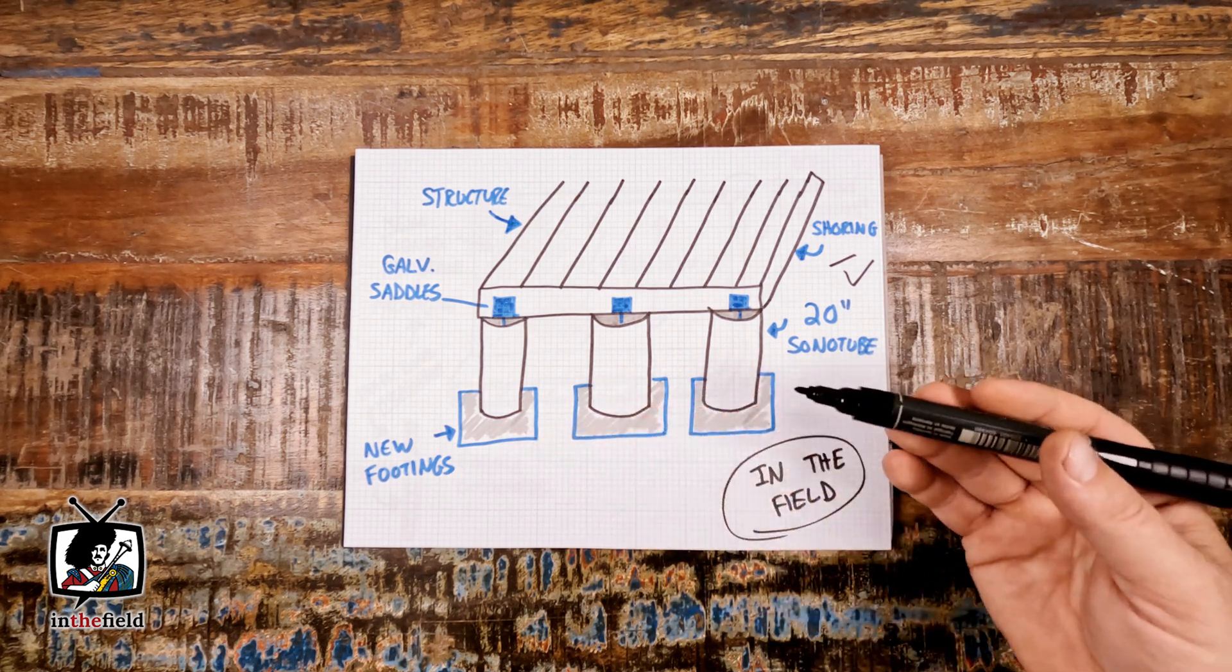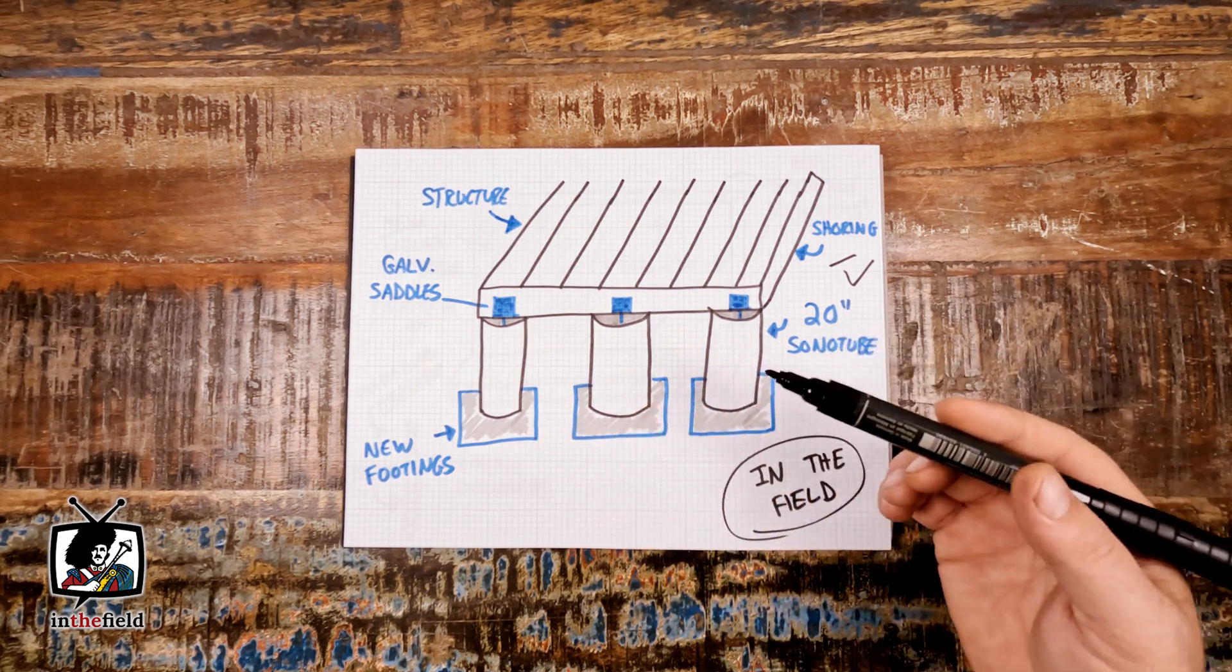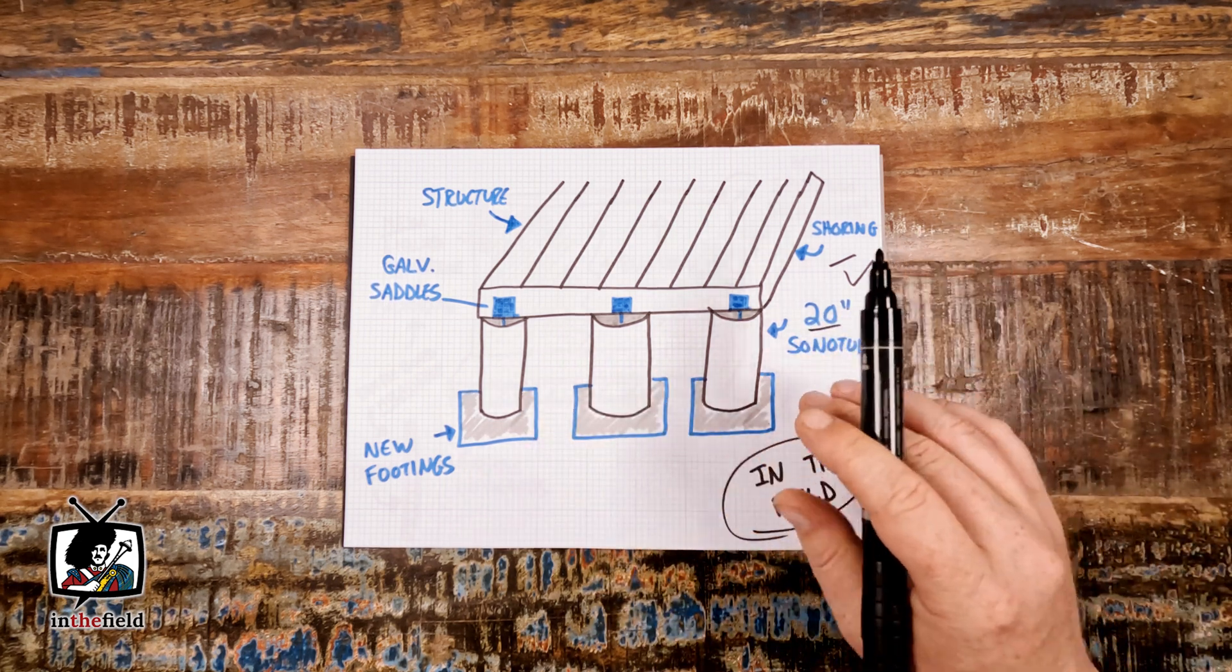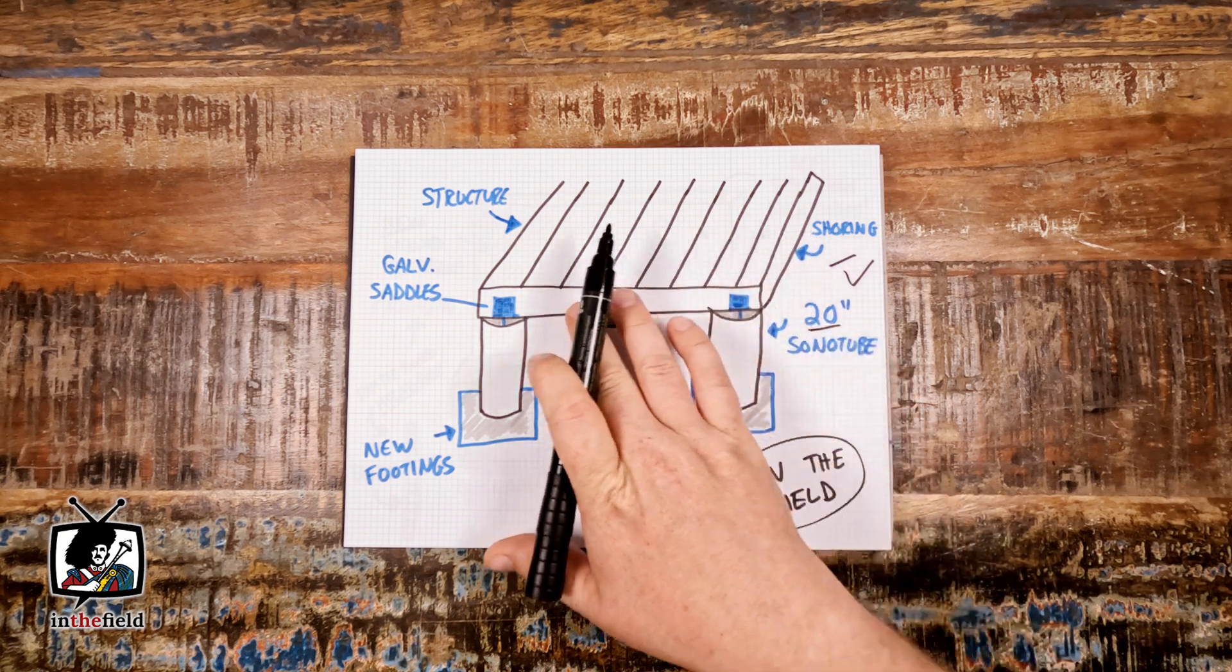Once these footings were cured we installed three new 20 inch diameter sonotubes and replaced the complete joist support with fresh timber.